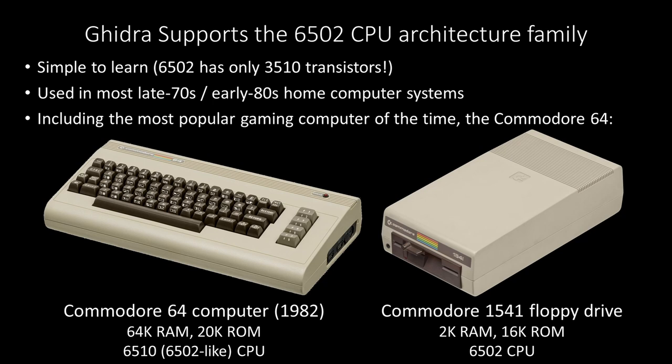We're going to be looking today at the Commodore 64, which you see there on the left. That has a 6510 processor, which is almost exactly a 6502, and the floppy drive on the right, which had its own processor, a 6502, so that you could send code to it for independent execution. If you're Gen X, this is what an amazing Christmas morning looked like in 1983.